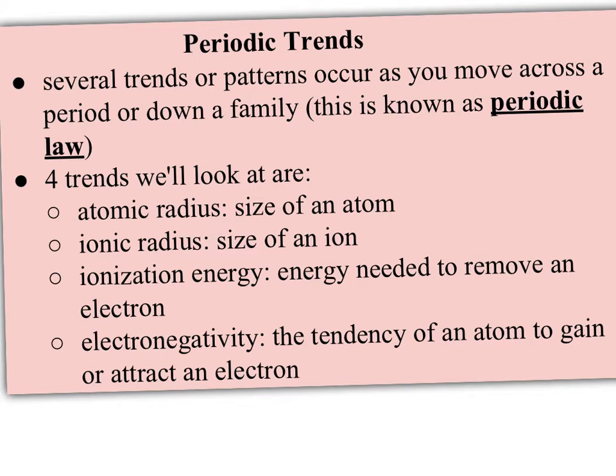There are four trends that we'll look at. The atomic radius, which is the size of an atom, just what it sounds like, the radius from the center to the outer edge. The ionic radius, which is the size of an ion. And as we'll learn, an ion is just an atom that has gained or lost electrons.